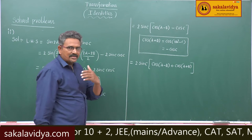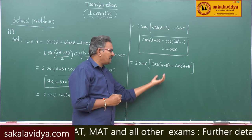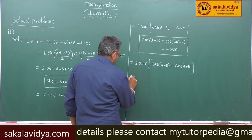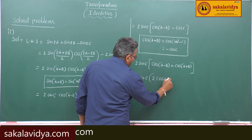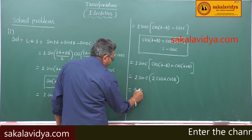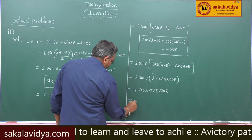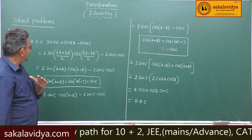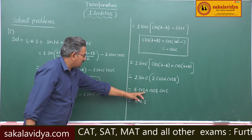As discussed in earlier episodes, cos(a-b) + cos(a+b) equals 2·cos(a)·cos(b). So this equals 2·sin(c) into 2·cos(a)·cos(b), which gives us 4·cos(a)·cos(b)·sin(c). This is the right hand side. Hence, if a+b+c = 180°, then sin2a + sin2b - sin2c = 4·cos(a)·cos(b)·sin(c).